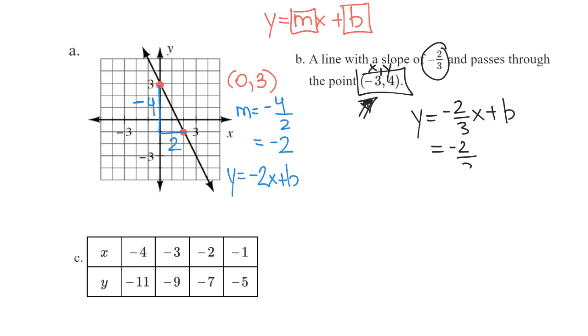So negative two-thirds, instead of writing x, I'm going to write negative 3. Hoo-hoo! And then I can replace the y with a 4. So the y becomes 4.